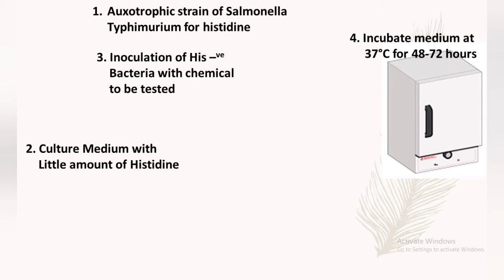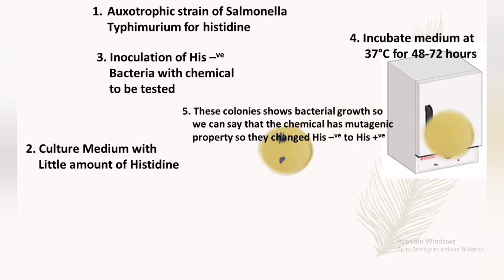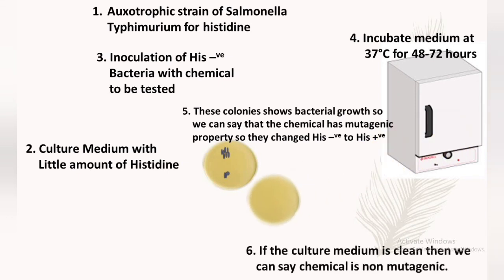The inoculated medium is then incubated at 37 degrees centigrade for around 48 to 72 hours. After 48 to 72 hours in the incubator, we will examine the culture medium. If colonies are present in the culture media, we can confirm that those are bacterial growth, and we can say that the chemical has mutagenic properties — it changed histidine-negative bacteria to histidine-positive, making them capable of producing histidine due to mutation. If we see a clear culture medium without any bacterial growth, then the test chemical does not have mutagenic properties.